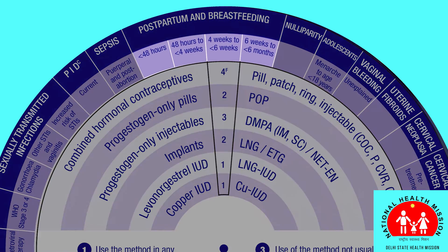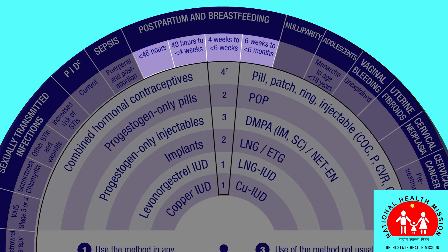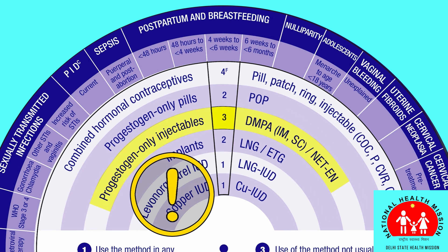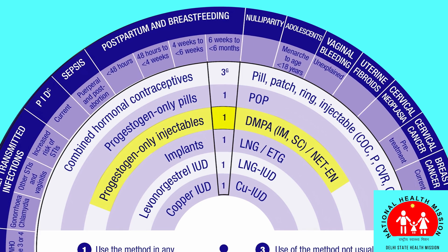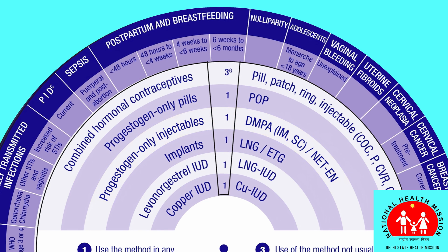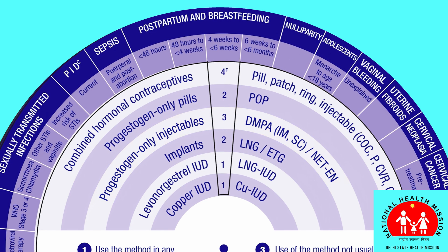There are four categories based on time since birth. She is 4 to 6 weeks postpartum. The number 3 indicates that the injection is not safe for her at this time. Moving the wheel forward, you will see the injection is safe for her after 6 weeks postpartum. Since she is 4 weeks postpartum, the MEC wheel indicates alternative methods given a 1 or 2, which are safe for her to start now.